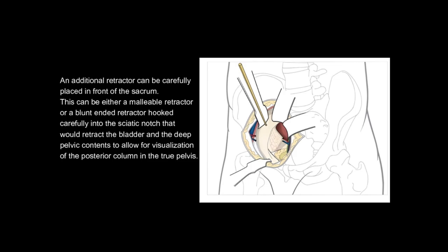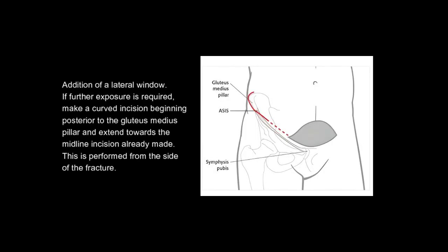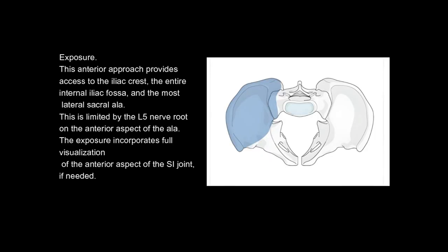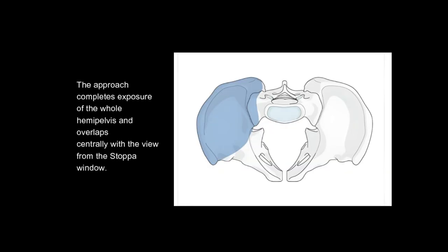An additional retractor can be placed in front of the sacrum — either a malleable retractor or a blunt-ended retractor hooked carefully into the sciatic notch — to retract the bladder and deep pelvic contents, allowing visualization of the posterior column in the true pelvis. If further exposure is required, a lateral window can be added. This anterior approach provides access to the iliac crest, the entire internal iliac fossa, and the most lateral sacral ala, limited by the L5 nerve root. The exposure incorporates full visualization of the anterior aspect of the SI joint if needed, completing exposure of the whole hemipelvis with overlap centrally with the Stoppa window.